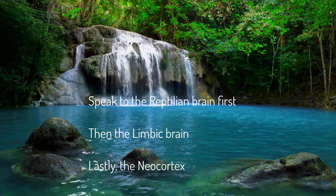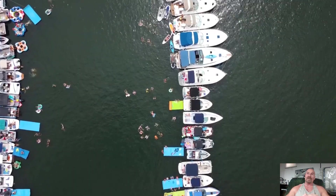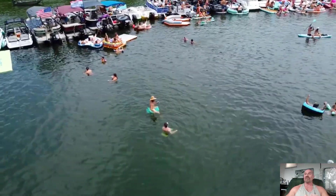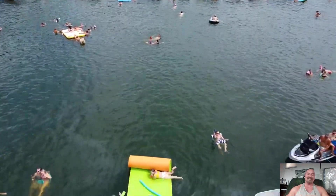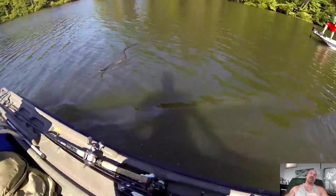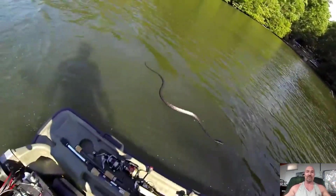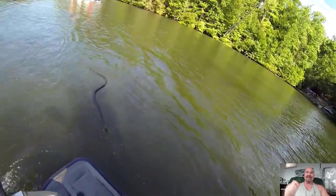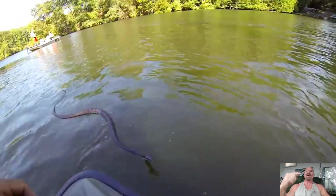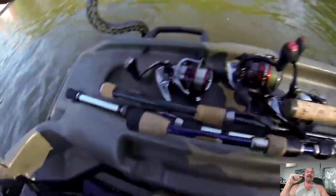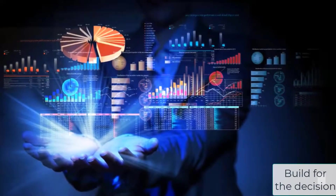This brain can make survival decisions before you or the other brains can even begin to process data. I know this firsthand: we were out at the lake, I was floating on a raft talking with friends and family, and I felt something brush my leg. Before I could look and see, I had reached down, grabbed, and thrown a four-foot water snake at least 30 feet across the water. I literally grabbed and threw a snake before my neocortex could even register it was on my lap. That's the reptilian brain, and that's what we try to speak to in our marketing.